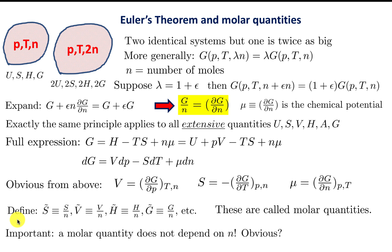These molar quantities can be experimentally measured. It is assumed that a molar quantity does not depend on the number of moles — so if the Gibbs free energy has a certain value for 2 moles, for 6 moles it should be 3 times as much. This scaling assumption holds as long as the system is big enough, meaning the constituents interact only with nearest neighbors and the forces between them are sufficiently short range.